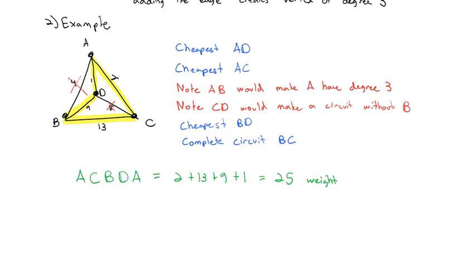Which has a weight of 2 plus 13 plus 9 plus 1, which is a weight of 25. Which I guess 25 is good. It's better than the 26 we got in the nearest neighbor algorithm. Ties actually is the same path that we got with the repeated nearest neighbor algorithm. It's still not optimal, but it's often better.